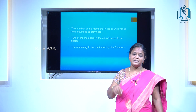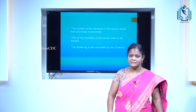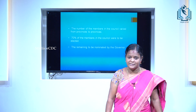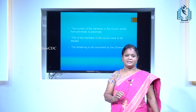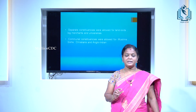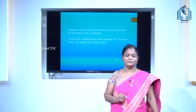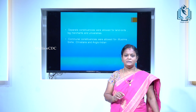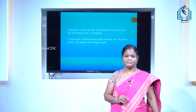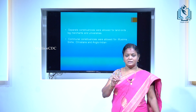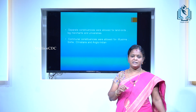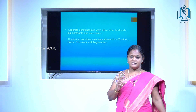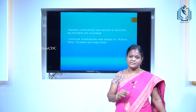70% of the members of the legislative councils were to be elected, with the remaining to be nominated by the Governor. Separate constituencies were allowed to big merchants, universities, and landlords. Communal constituencies were allowed to Sikhs, Muslims, Christians, and Anglo-Indians.